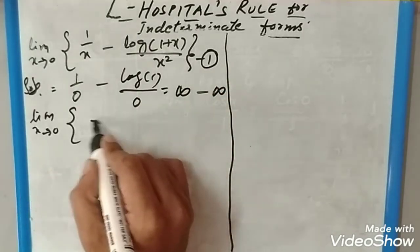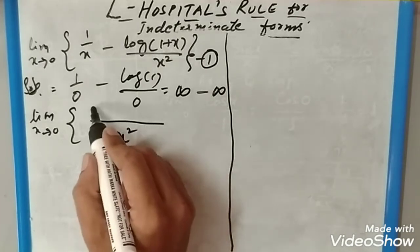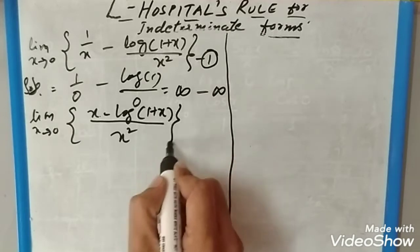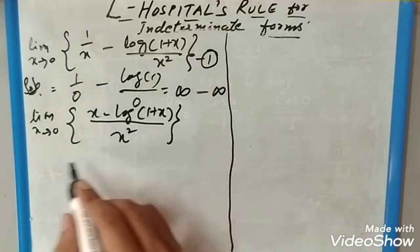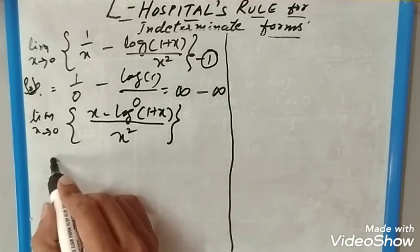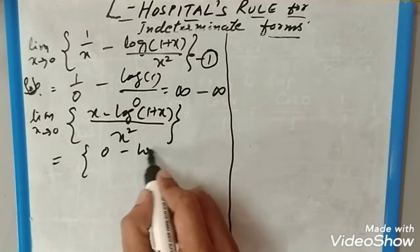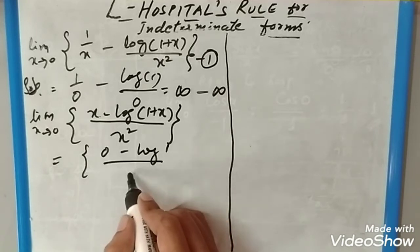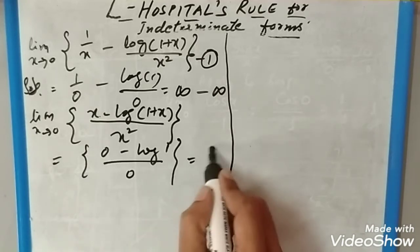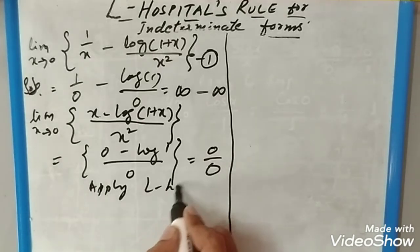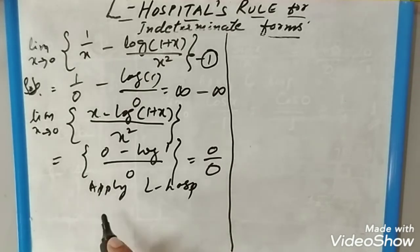Limit x tends to 0, the LCM is x². We get x minus log(1+x) after taking the LCM. Now if you apply x tends to 0 limit, you will get 0 minus log of 1 divided by 0, which is also 0/0 form. Now you can apply L'Hospital's rule.